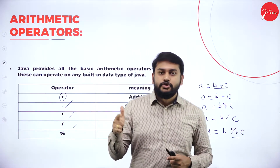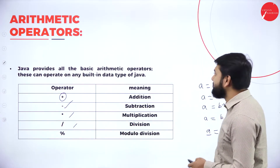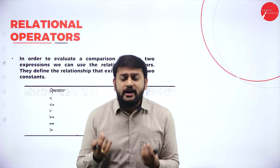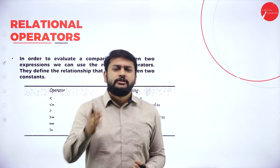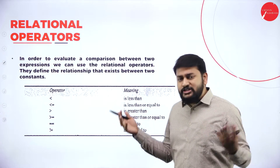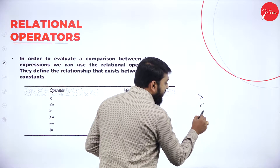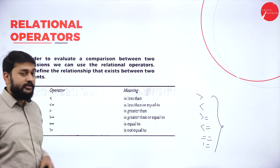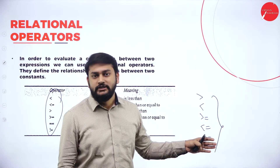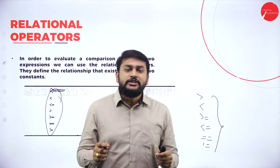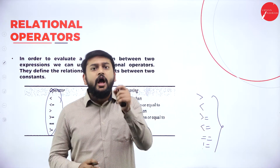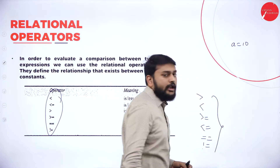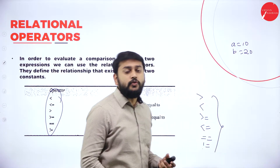To summarize, there are five types of arithmetic operators: addition, subtraction, division, multiplication, and modulus. Moving on to relational operators — these are used to identify the relationship between two variables. The different types of relational operators are: greater than, less than, greater than or equal to, less than or equal to, equal to (==), and not equal to.